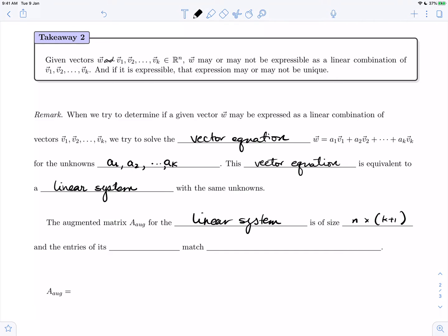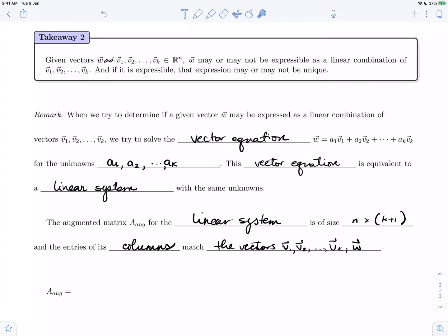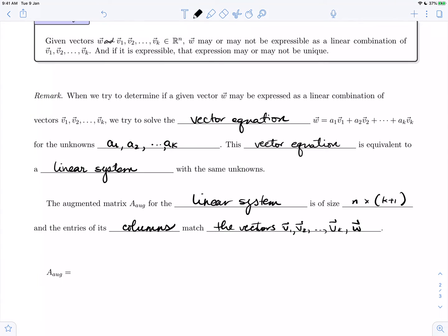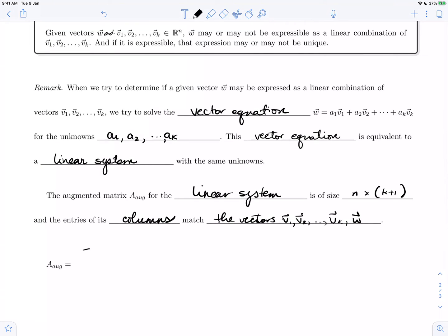And the entries of its columns match the vectors v1, v2, all the way up to vk, and w. The k plus 1 vectors - k plus 1 is the number of columns with n entries in each of them, the number of rows. In other words, the augmented matrix has this kind of shape.